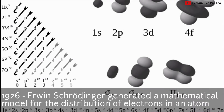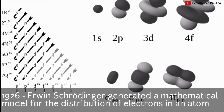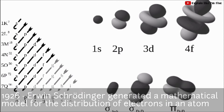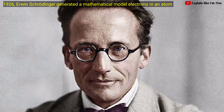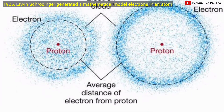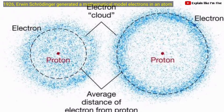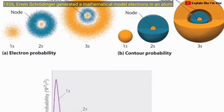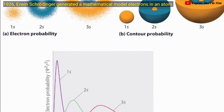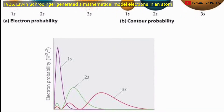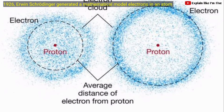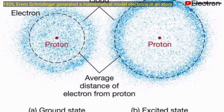In 1926, Erwin Schrödinger generated a mathematical model for the distribution of electrons in an atom. The solution to the Schrödinger equation led to quantum numbers, which provide the address of the electrons in an atom. Schrödinger combined the equations for the behavior of waves with the de Broglie equation to generate this mathematical model.